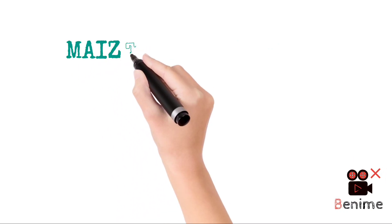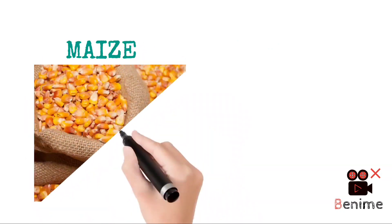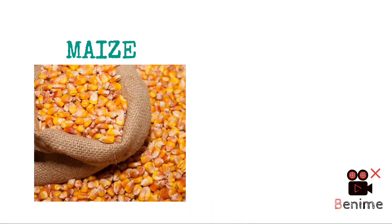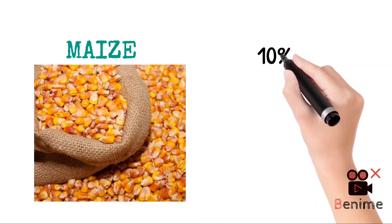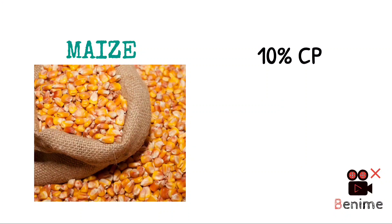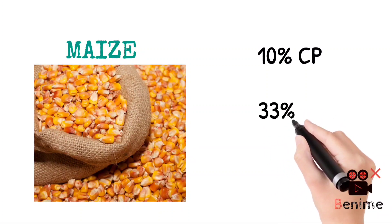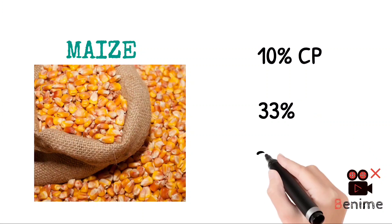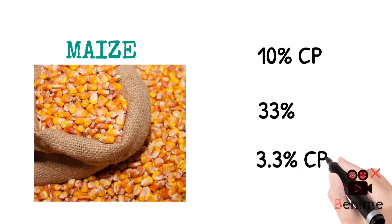The last but not the least protein source is maize. Maize contains 10% protein, and here we use 33%, which will give us 3.3% protein. As mentioned, maize is used as a source of energy but it also provides protein.